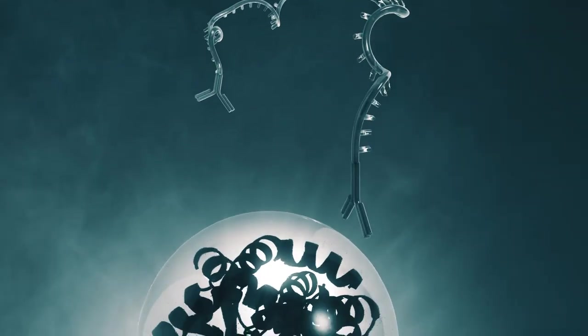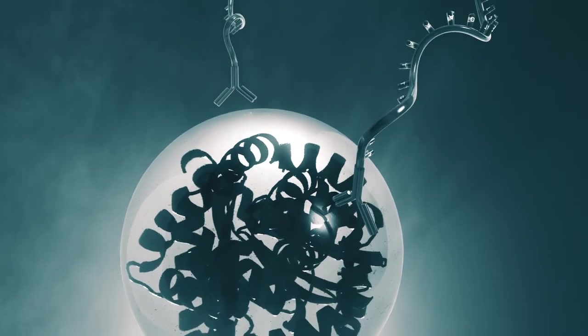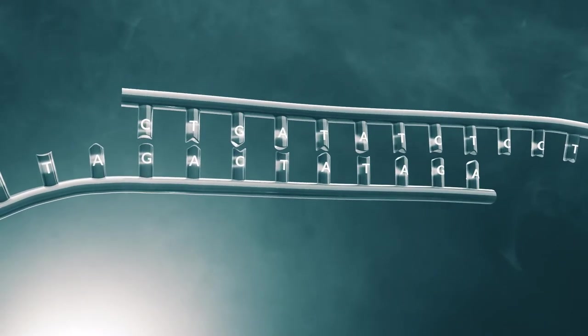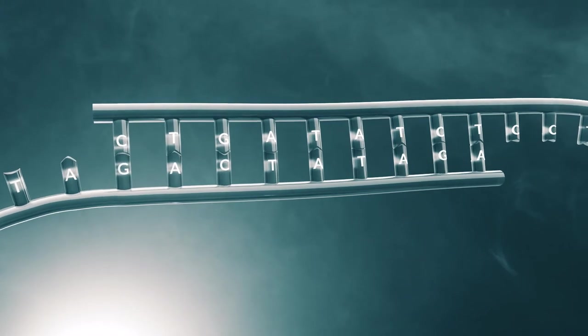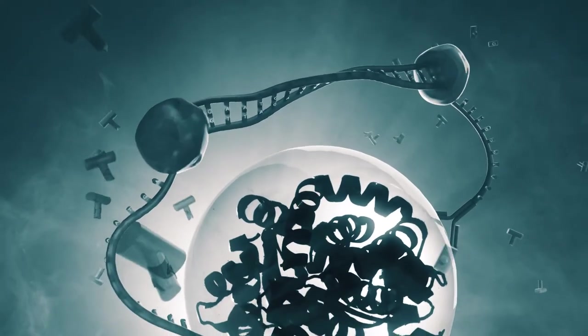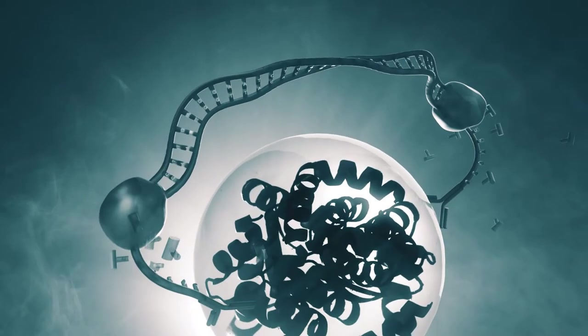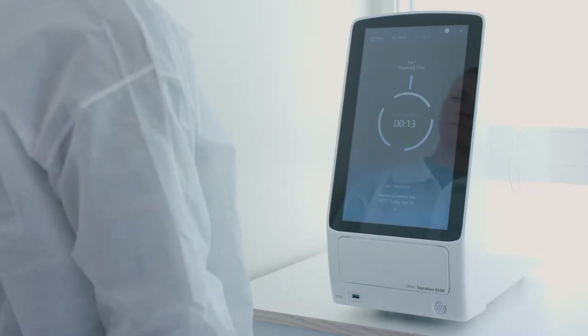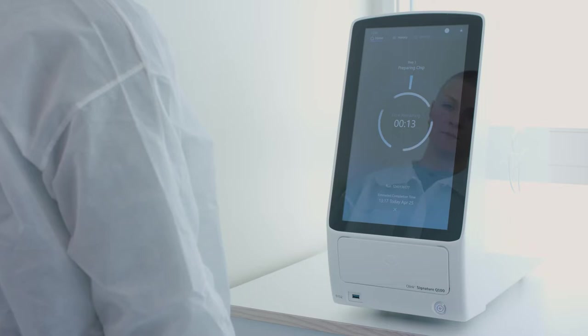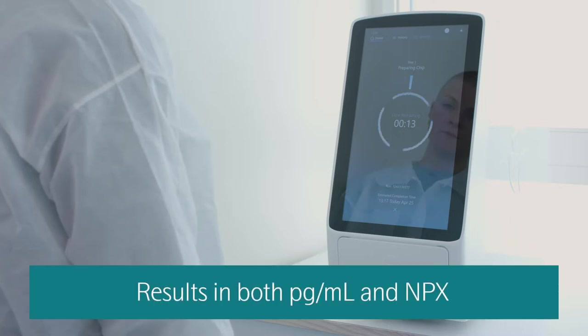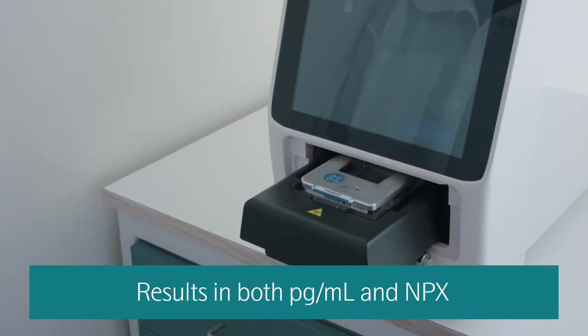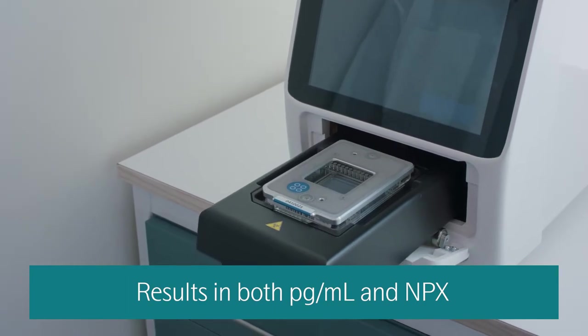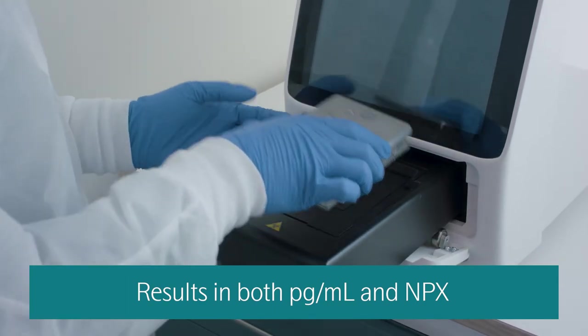O-Link Target 48 enables simultaneous analysis of 45 carefully selected proteins across 40 samples from just one microliter of sample using the Proximity Extension Assay, or PEA, technology. The results from Target 48 can be provided in standard concentration units, picograms per milliliter, as well as Normalized Protein Expression, NPX.